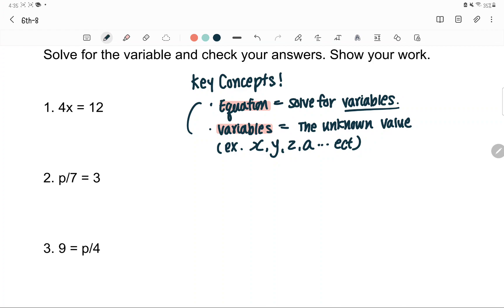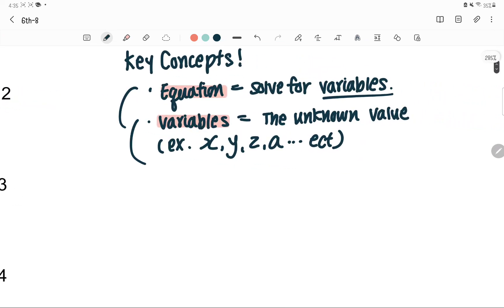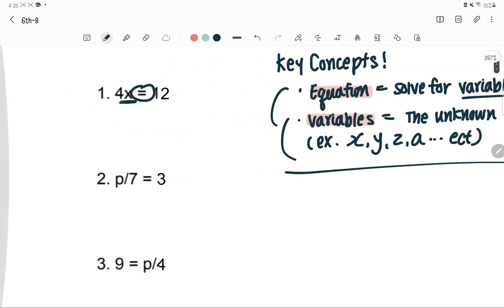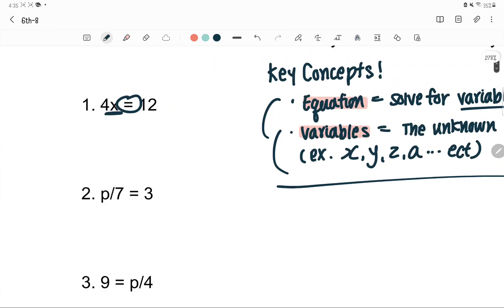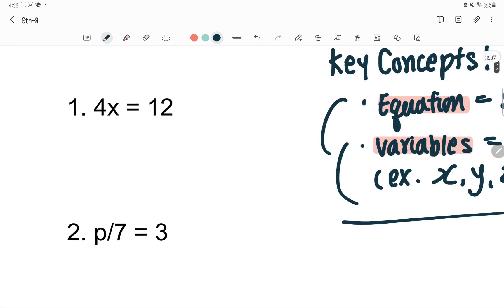Let's look at number 1. It has 4x equals 12. It has an equal sign, a variable (which has a definition over here), and numbers like 4 and 12 in this case. You have to solve for x. The key concept is that you have to leave the variable on one side of the equation.